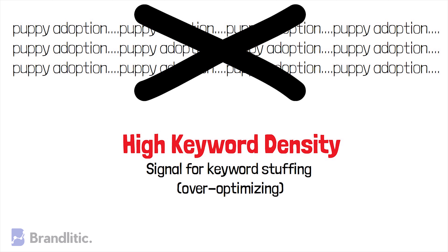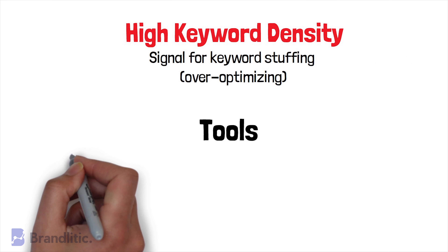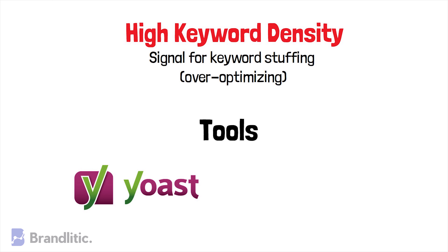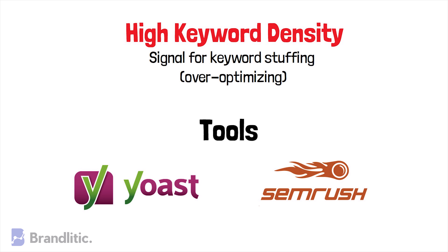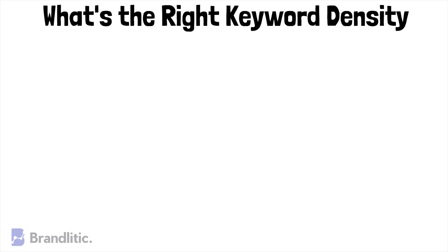There are plenty of free tools online to check your keyword density, like Yoast SEO, which checks keyword density for your text in almost real time. If you're looking for something more robust that is paid, try SEMrush — their SEO suite is tailored to support all your business requirements and offers many more features to help your business grow. There's a link in the description below. Now, what's the right keyword density for SEO?